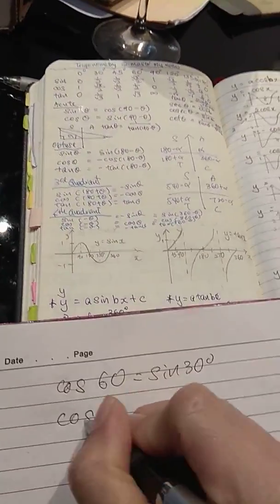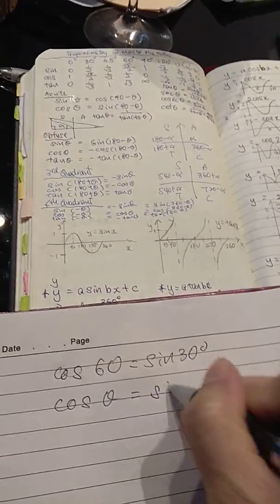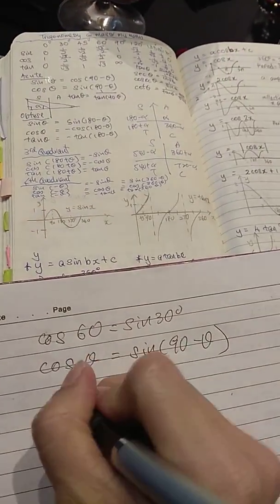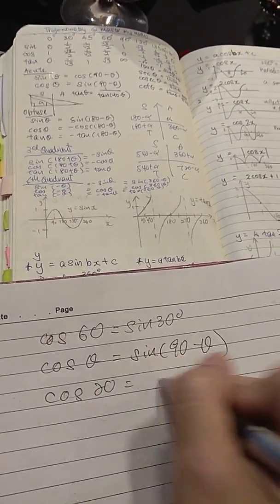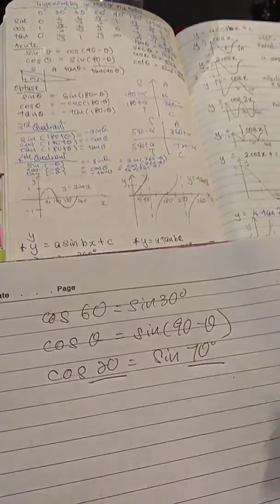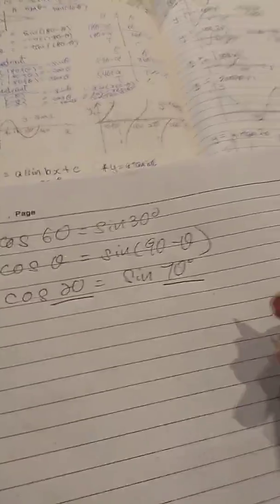All right, so based on this formula, cos theta equals to sine 90 minus theta. So if I have cos 20, it's the same as sine 70 degrees. As long as this and this add up to 90.